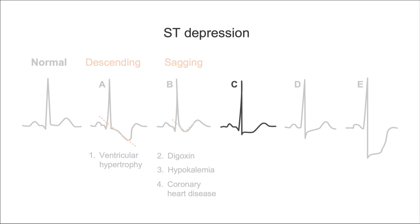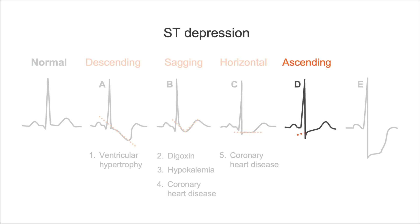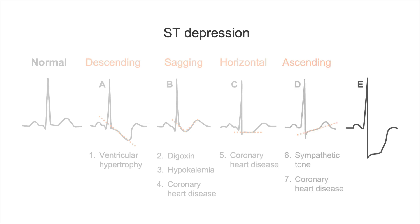Moving on to example C: this is a classical, horizontal type of ST-depression, typically seen in patients with coronary artery disease. This is very specific for coronary problems. In example D, you see an ascending form of ST-depression, which may be caused by high sympathetic tone, physical activity, or coronary heart disease. In example E, we see a very severe form of ST-depression usually seen in neighboring precordial leads in the setting of severe ischemia.